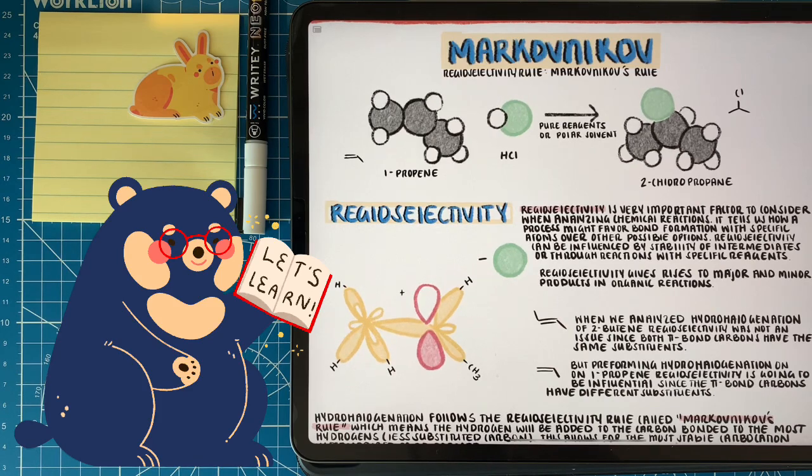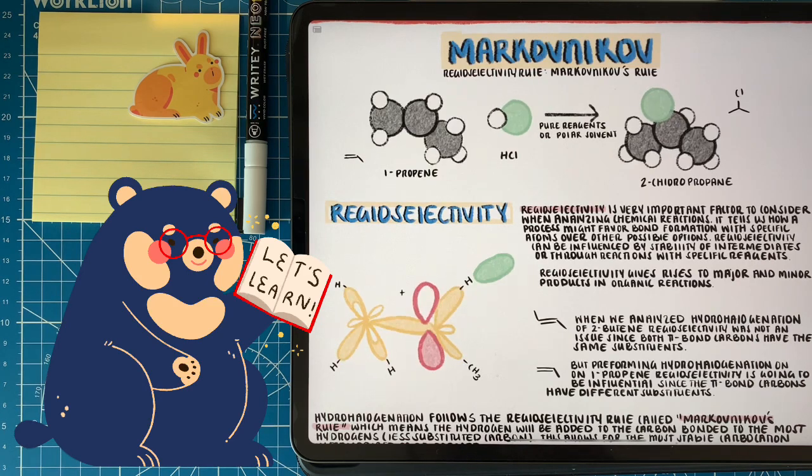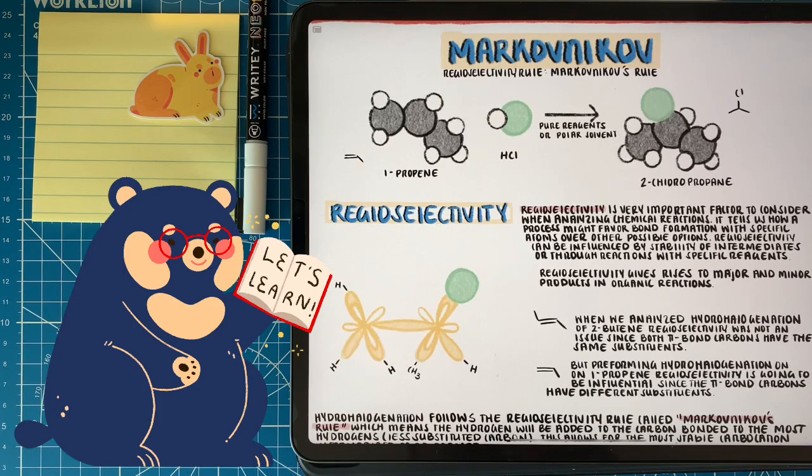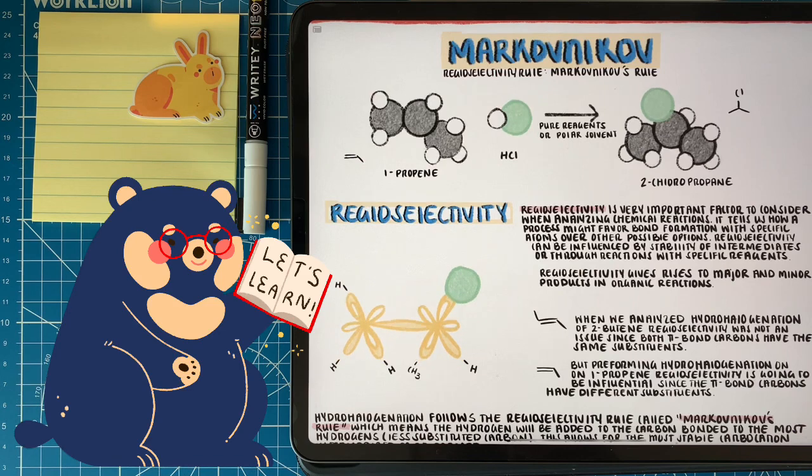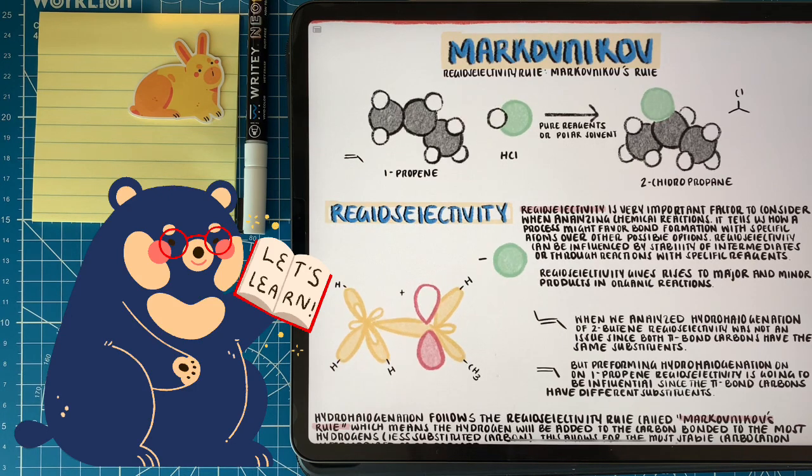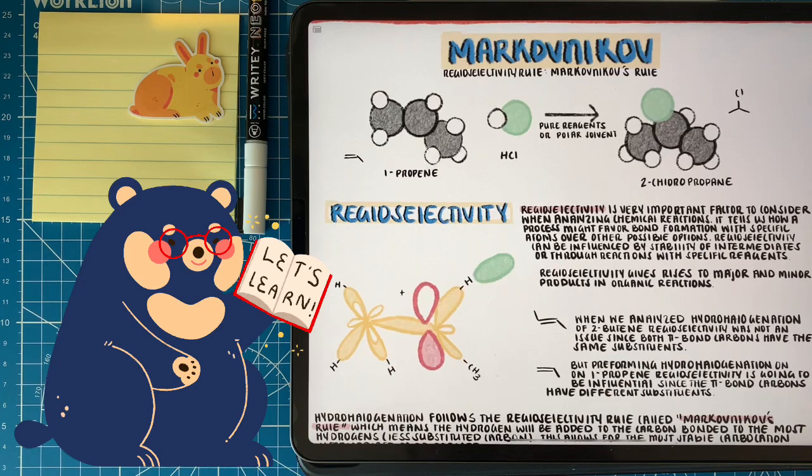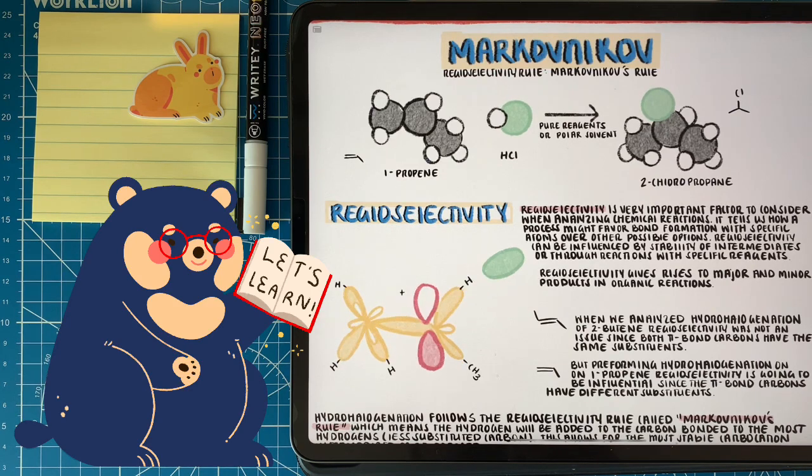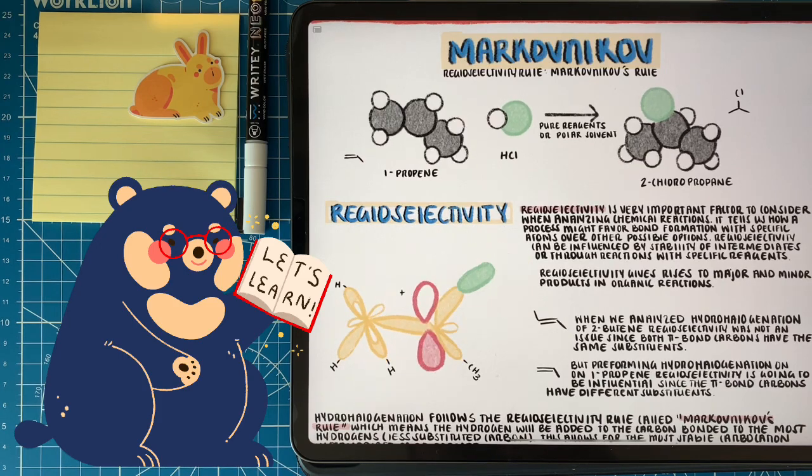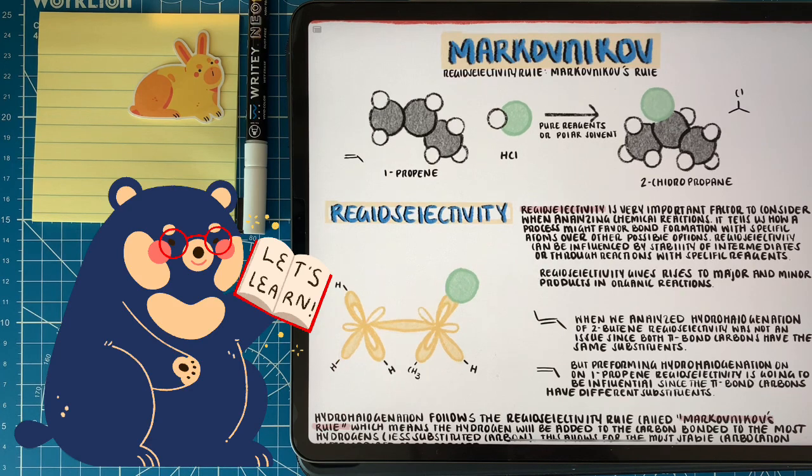This is where we talk about regioselectivity and Markovnikov's law. The hydrogen is going to get added to the double bond carbon with the most hydrogens, or the carbon that is less substituted. Both of those things mean the same thing. Because by doing so, we're going to have the carbocation on the carbon that allows us to have the more stable carbocation intermediate. For example, look at 1-propene. If we put that hydrogen on the first carbon, or the most left carbon, we're going to have the carbocation on that center carbon giving us a secondary carbocation. If we had it flipped, we would have a primary carbocation. So by following Markovnikov's law, we can have a more stable intermediate, and this is why we have to focus on where that hydrogen is getting added when we look at our molecule.